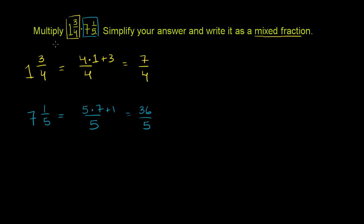So this product is the exact same thing as taking the product of 7 over 4 times 36 over 5. And we could multiply it out right now, take the 7 times 36 as our new numerator, 4 times 5 as our new denominator, but that'll give us large numbers. I can't multiply 7 and 36 in my head, or I can't do it too easily. So let's see if we can simplify this first.